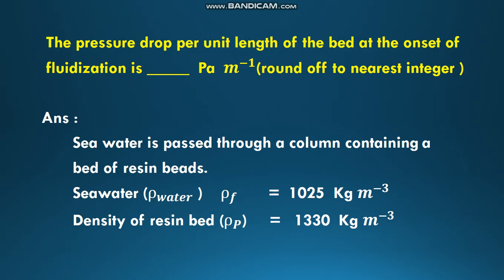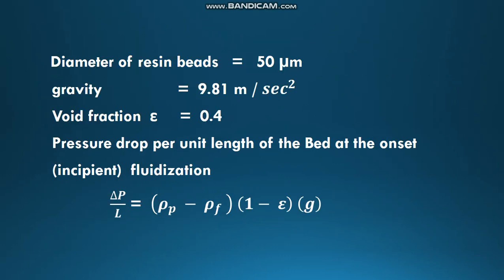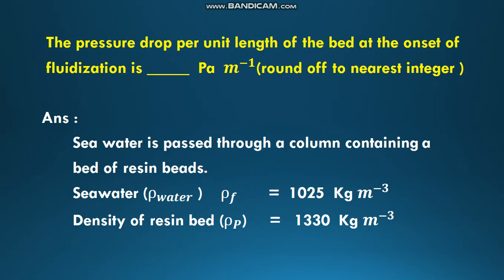The solution: density of seawater ρ_f equals 1025, density of resin beads 1330 kg/m³, diameter is 50 micrometers, gravity 9.81, void fraction ε equals 0.4.